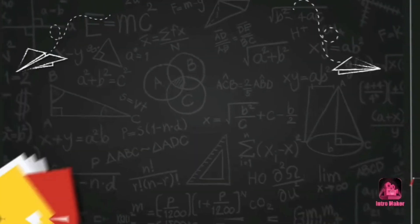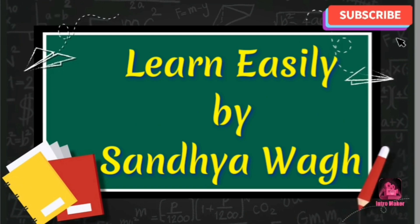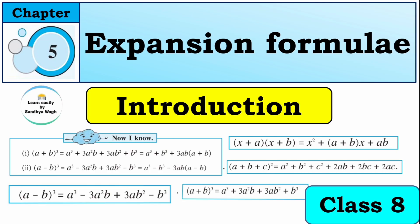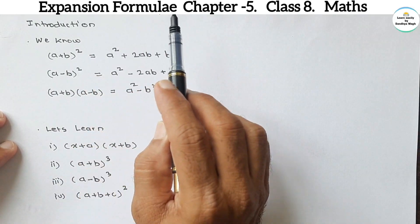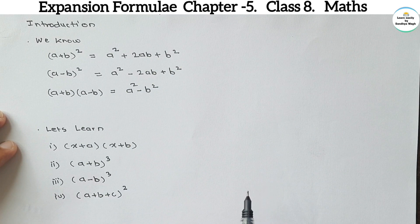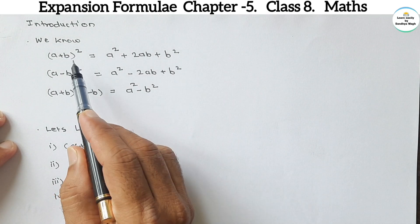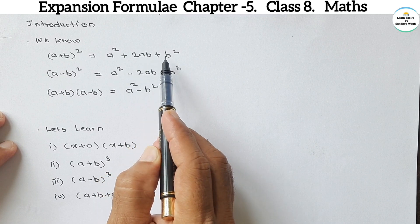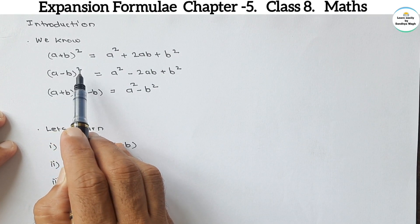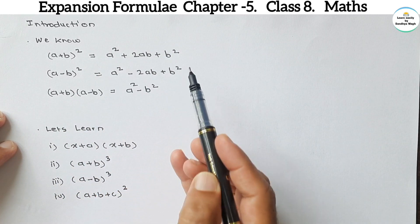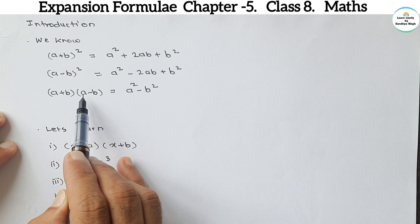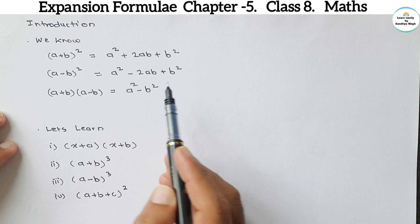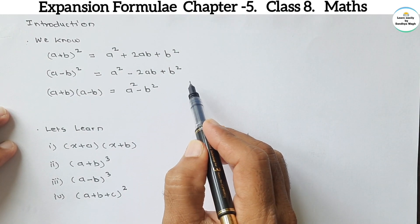Hello, I am Santoshwa. Welcome to the channel 'Learn It' by Sandhya Bhag. Here we will see all information about the chapter Expansion Formula. We will also see thoroughly how the expansion formula is derived. In the previous standard, we studied the standard identities: (a+b)² = a² + 2ab + b², (a-b)² = a² - 2ab + b², and (a+b)(a-b) = a² - b².